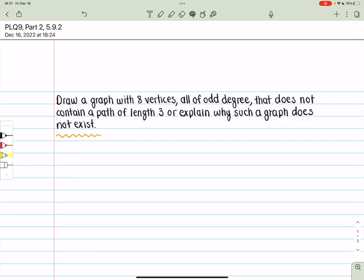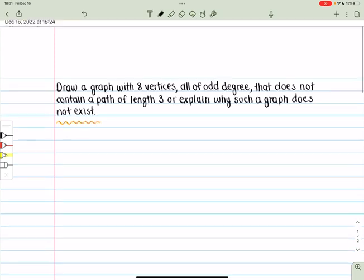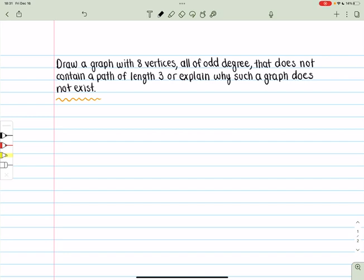The question asks: draw a graph with 8 vertices, all of odd degree, that does not contain a path of length 3, or explain why such a graph does not exist.